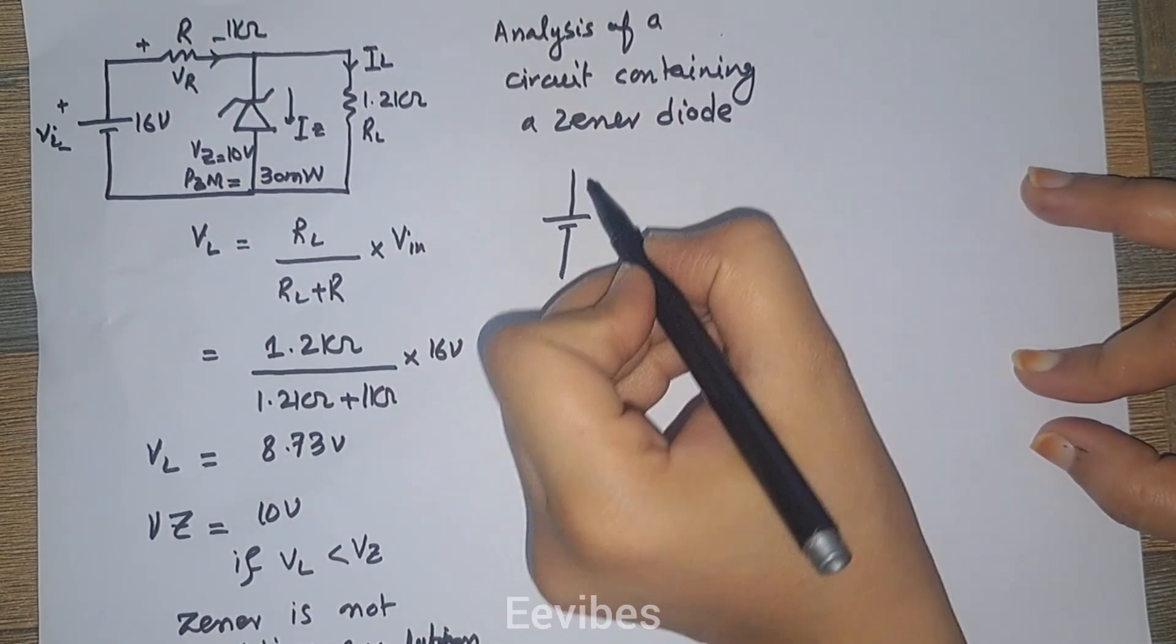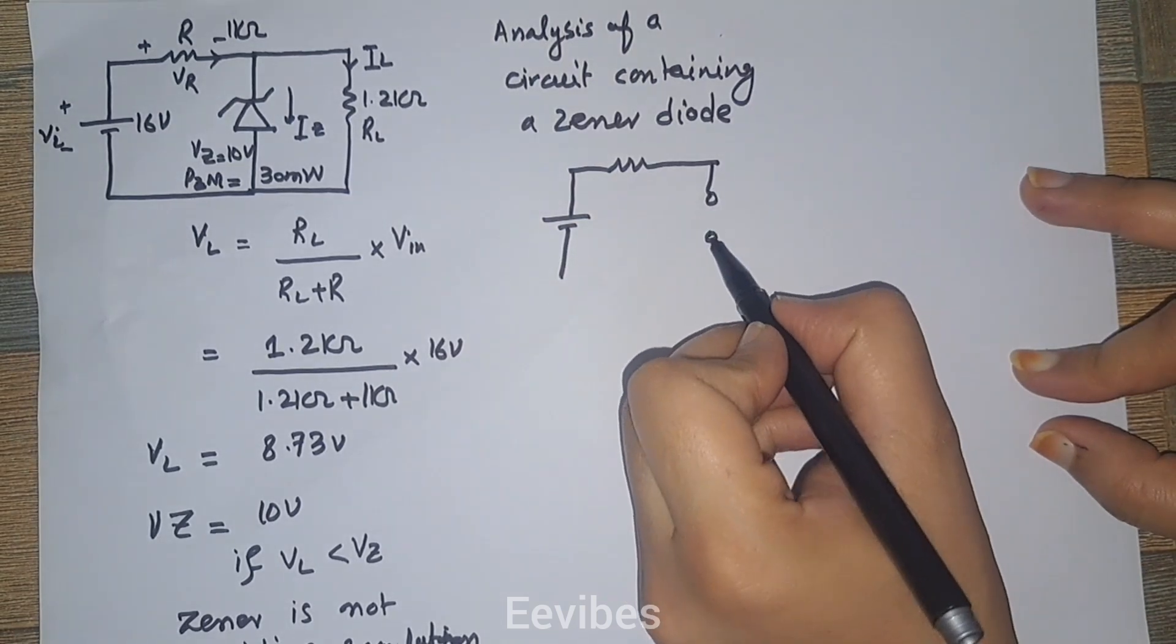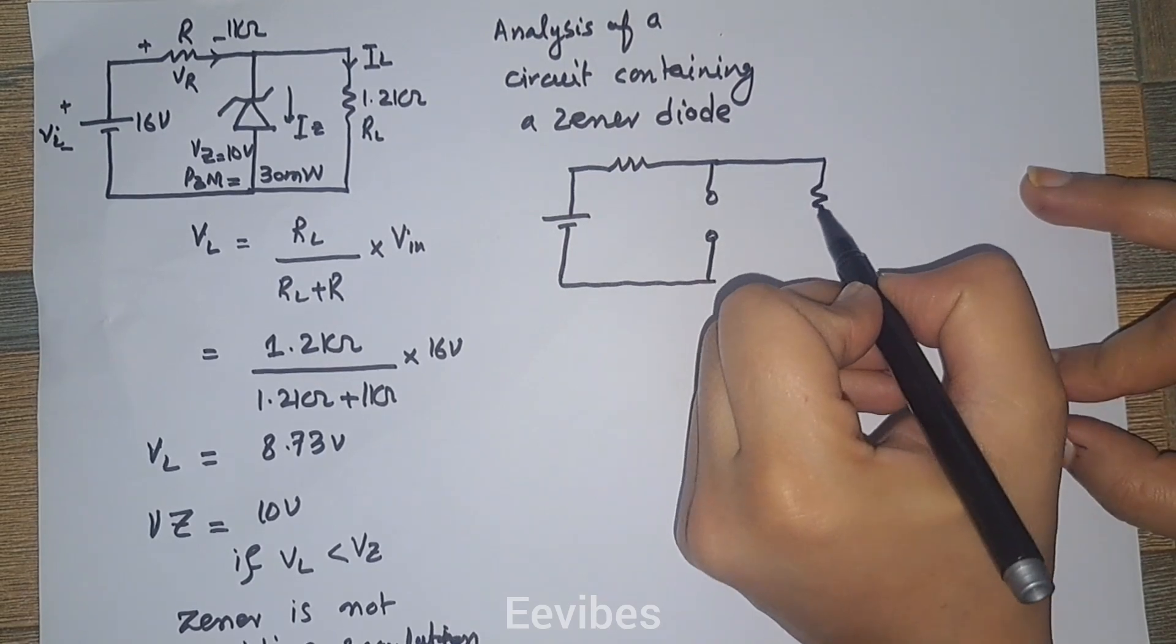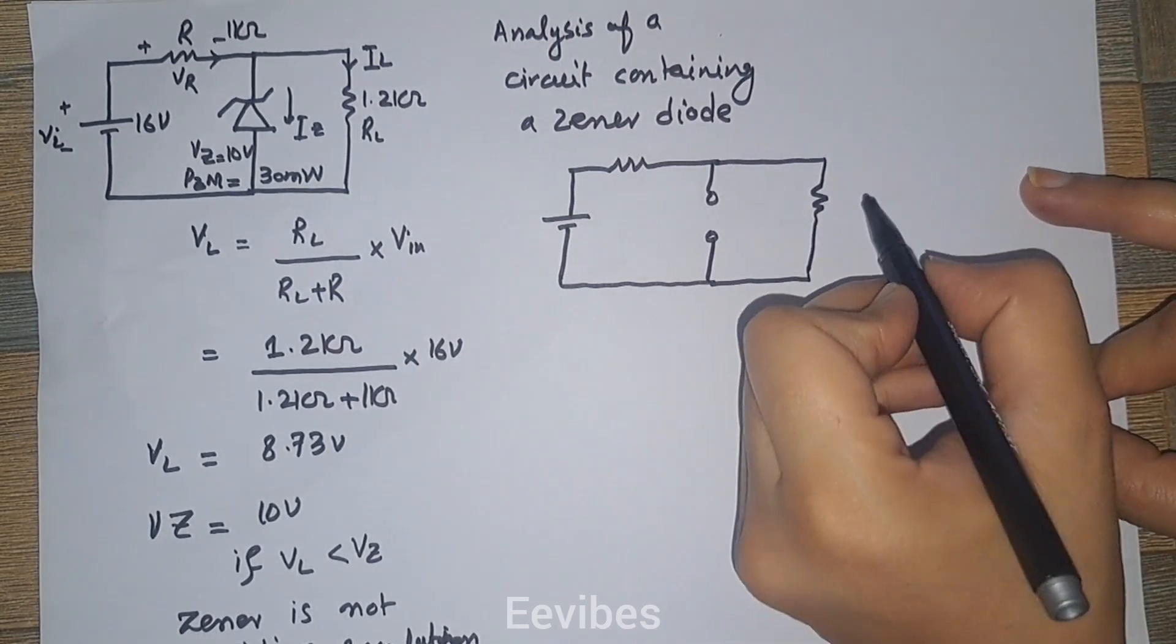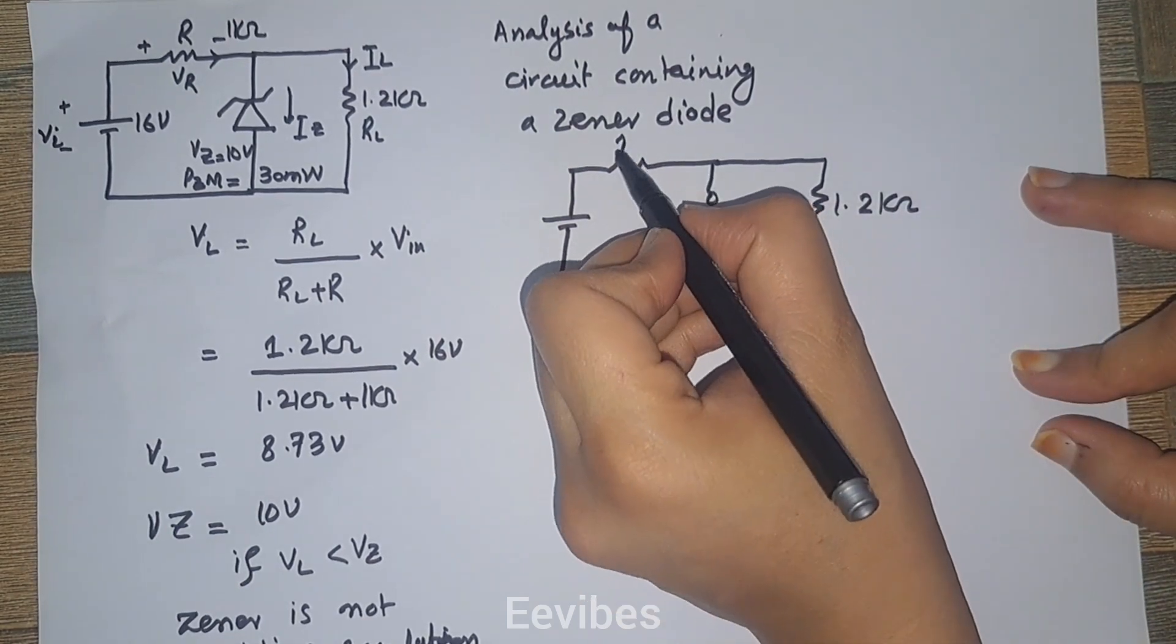The rest of the circuit remains as it is. Here you will have 1.2 kilohms and here is 1 kilohm.